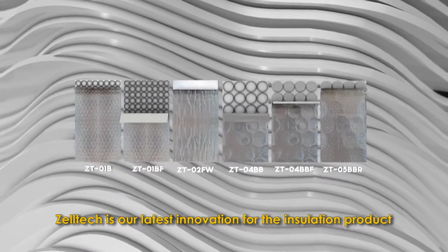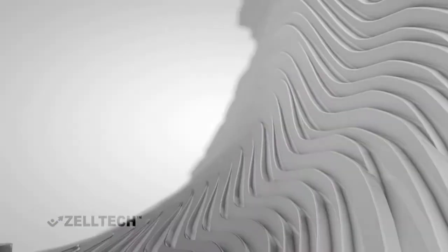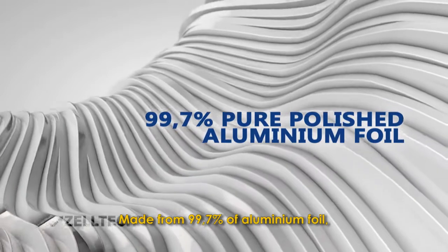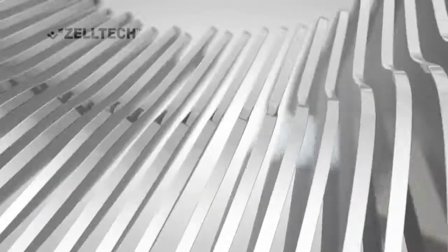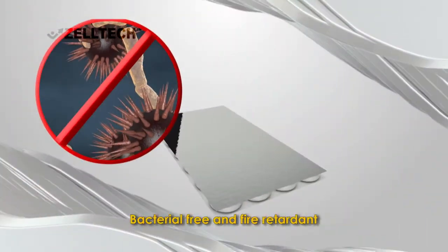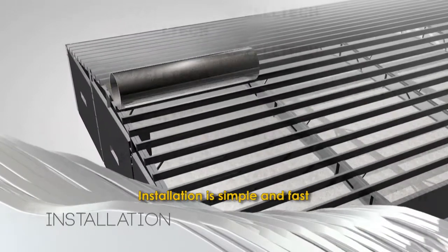CELTEK is our latest innovation for the insulation product. Made from 99.7% aluminum foil, it is durable for more than 10 years. Bacteria-free and fire retardant. Installation is simple and fast.